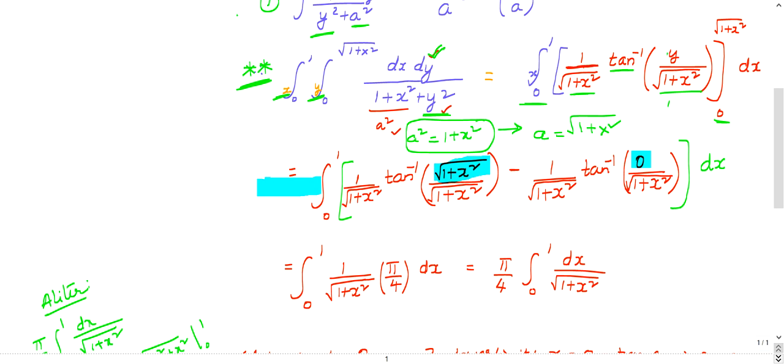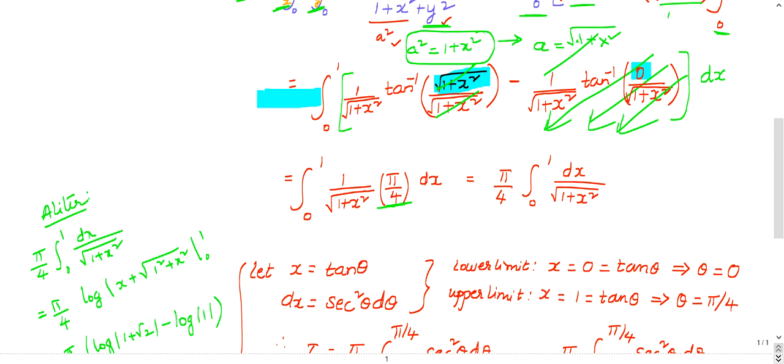So this and this will cancel, this will remain 1. Tan inverse 1 is nothing but pi by 4, and tan inverse 0 is 0, so I can completely eliminate this term. Now what you are left with is 0 to 1, 1 by under root 1 plus x square, pi by 4, dx. Pi by 4 you can take out: under root dx by under root 1 plus x square. So this is the integration you need to solve.